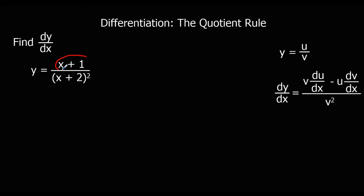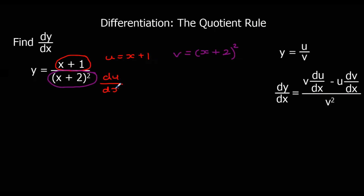Let's look at another example. We've got a function on top — we'll call that u, so u equals x plus 1 — divided by the function on the bottom, which we'll call v, so v equals x plus 2 squared. We don't get a choice of which way around u and v go: for the quotient rule, u is always on top and v is always on the bottom. So we're going to differentiate both of them. du/dx is 1. And dv/dx, using the chain rule, we differentiate around the bracket to the power of 1 times by the bracket differentiated, which is just 1, so we get 2 times x plus 2.